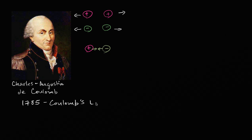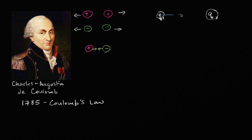The purpose of Coulomb's Law is to predict what the electrostatic force of attraction or repulsion between two charges will be. In Coulomb's Law, if I have two charges — let's call them Q1 and Q2 — and the distance between them is R, Coulomb's Law states that the magnitude of the electrostatic force, F_E, can be calculated.